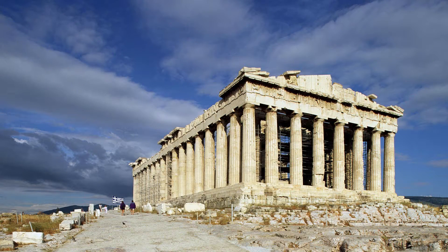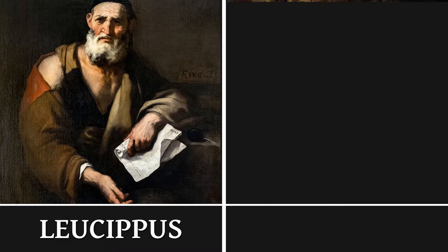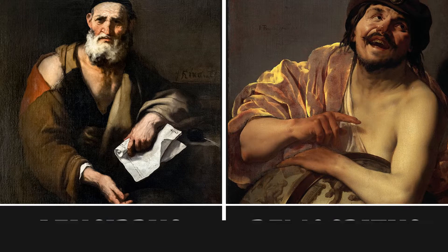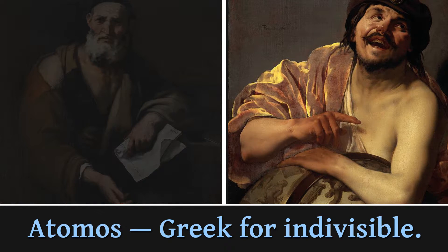Our lesson begins, as many do, with the ancient Greeks and a simple question: if you kept dividing an object indefinitely, what would be the result? In 5th century BCE, two philosophers, Leucippus the teacher and Democritus his pupil, proposed the idea of the atomos, Greek for indivisible. The common consensus attributes the origin of the atom to Democritus.